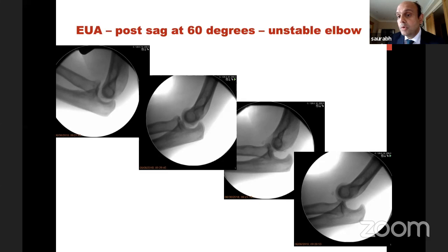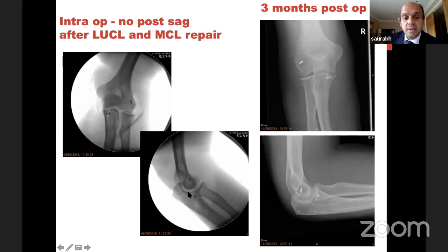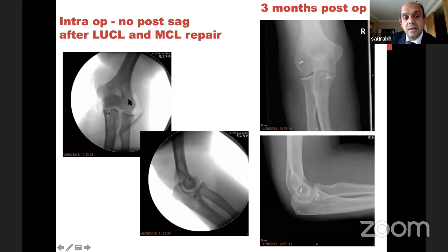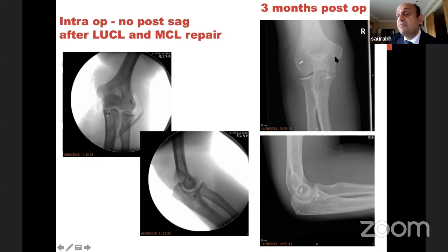I took this patient to theatre: universal midline, radial head intact so I did a medial ring approach. Two drills at the back of the ulna, got the capsule back with lasso technique. Then addressed the LUCL with an anchor laterally. Because I had already done the medial approach and the CT showed a MCL flake, I used that opportunity to also attach the anterior band of MCL. Note the difference: lateral ligament comes off the humerus/epicondyle; MCL normally comes off the sublime tubercle. Posterior sag test negative after the repair.